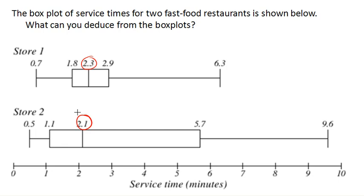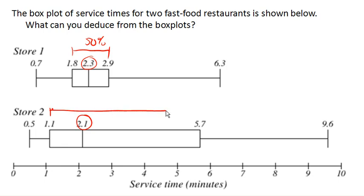However, we can also notice the range of values. Remember, the quartiles divide the data into quarters, so the box represents 50% of the data. At store one, 50% of the time you're served between 1.8 and 2.9 minutes. At store two, 50% of the time you're served between 1.1 and 5.7 minutes. So the second store is a lot less consistent in its service time, while the first store seems to be more consistent in its delivery.